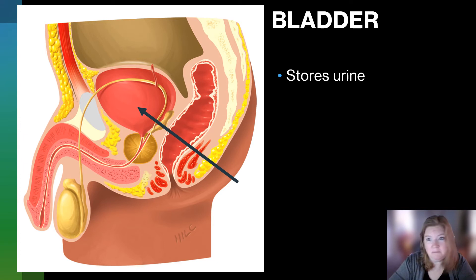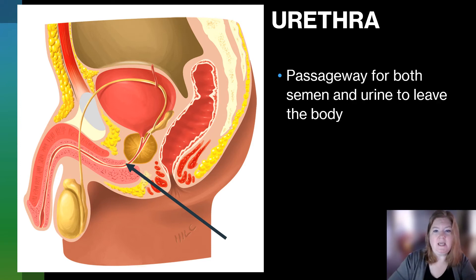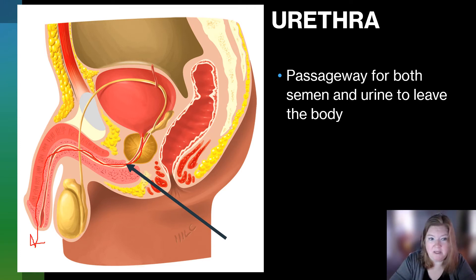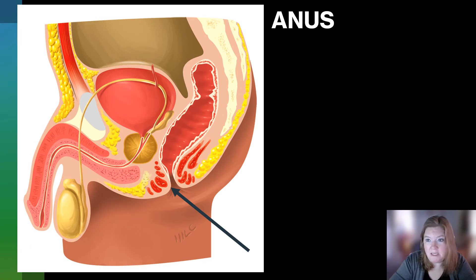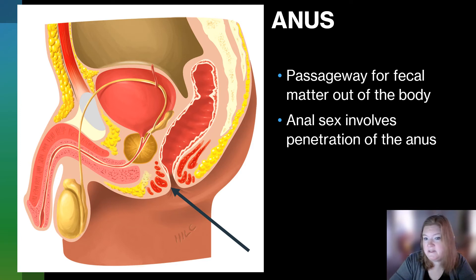The bladder stores urine. The urethra is a passageway for both semen and urine to leave the body. It's a long tube: here's the urethra leaving the bladder, going all the way and coming out the tip of the penis. The anus is a passageway for fecal matter out of the body. Anal sex involves penetration of the anus, and if we're talking safe sex, a condom should still be used in this case.